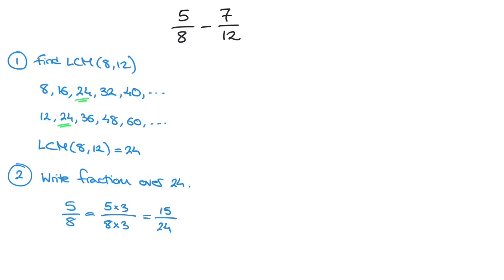We do the same thing now for 7 over 12. Let's look at the list again. We notice that 24 is the 2nd multiple of 12. So to write this fraction as a fraction over 24, the denominator is 12 times 2. Since we've multiplied the denominator by 2, we do the same on the numerator. That leads us to 14 over 24.